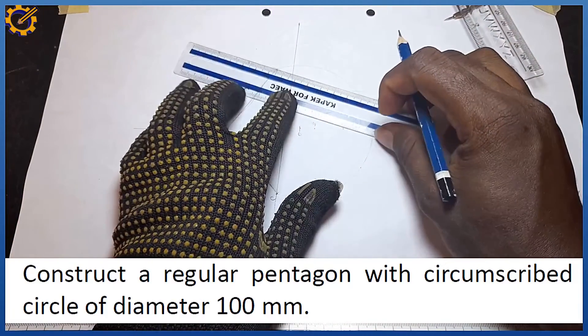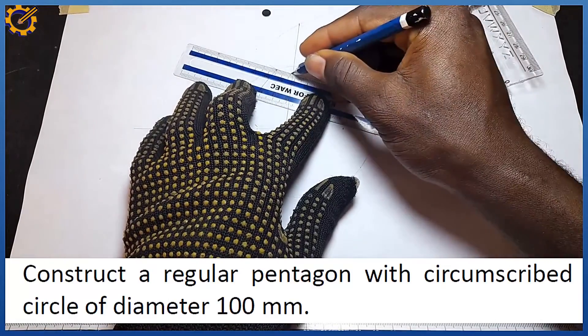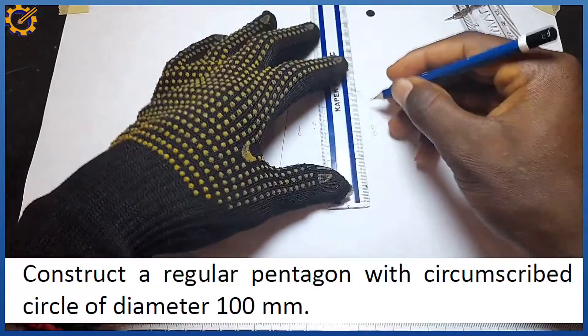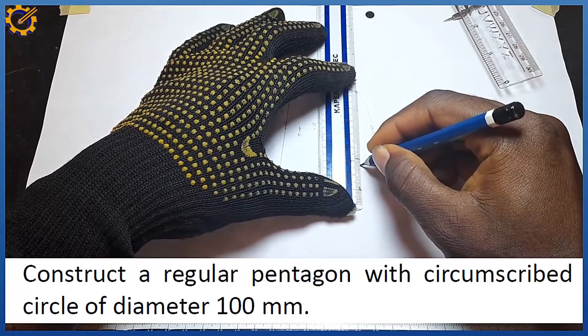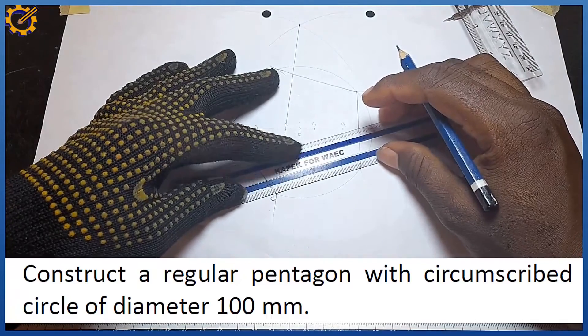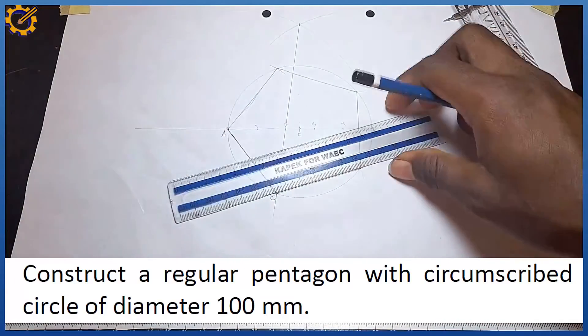So this spot down here, then this junction to C. As you can see, that is it. That is our pentagon using the circumscribed circle method. Kindly ensure you subscribe.